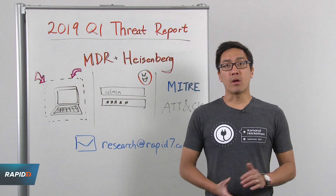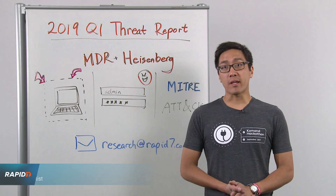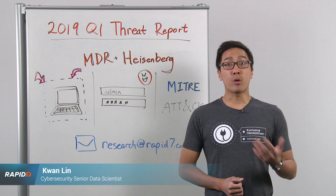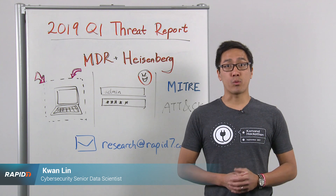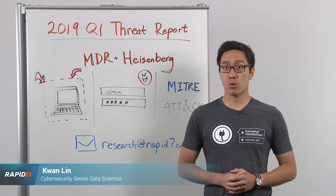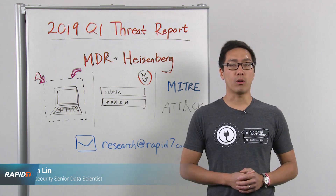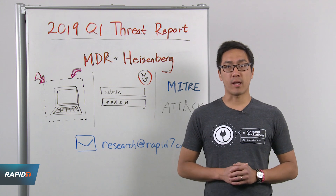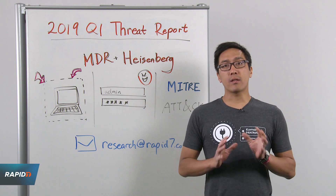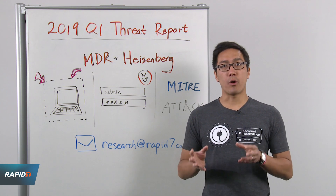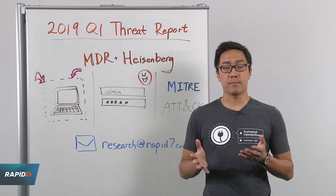Hi, my name is Kwon Lin, Senior Data Scientist at Rapid7 and one of the authors of the recently released 2019 Quarter 1 Threat Report. In this week's Whiteboard Wednesday, I'd like to briefly cover some of the key components of the report.